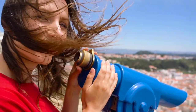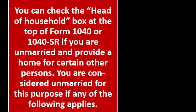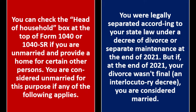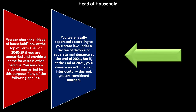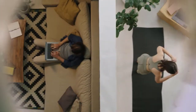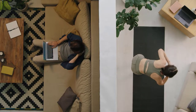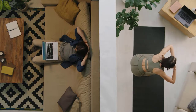Now we're looking at head of household. You can check the head of household box at the top of Form 1040 or 1040-SR if you are unmarried and provide a home for certain other persons. You are considered unmarried if you were legally separated according to your state law under a decree of divorce or separate maintenance at the end of 2021. If they were separated without a formal divorce, it gets into a gray area and you have to look into state law to see if it qualifies as a separation.